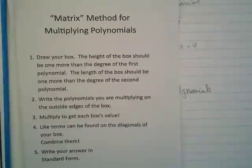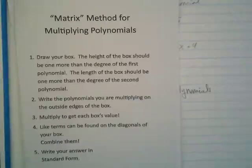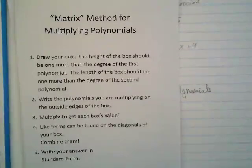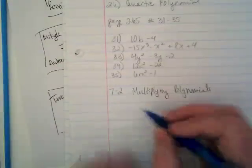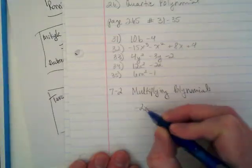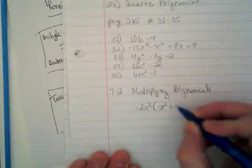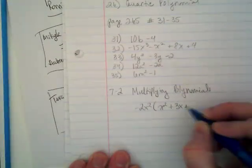Okay, so it says here draw your box. The height of the box should be one more than the degree of the first polynomial. The length of the box should be one more than the degree of the second polynomial. That sounds confusing, but I'm going to have you guys multiplying -2x² times x² + 3x + 4. Please write that polynomial on your paper.